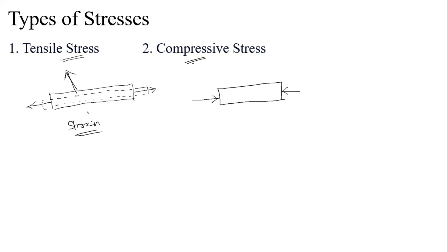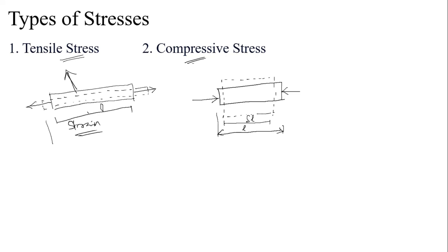Whenever the body is subjected to equal and opposite pushes, it automatically tends to shorten its length and increase the cross section. The original length reduces to a new shorter length, and the change in length is called del l. This change in length after applying the compressive load is denoted as del l.